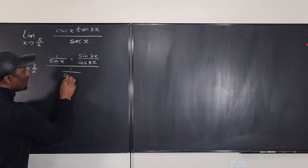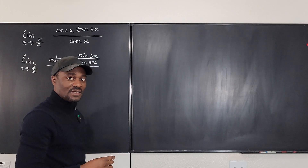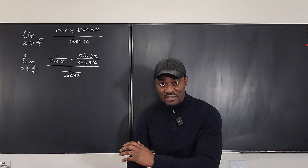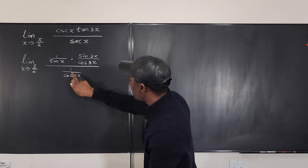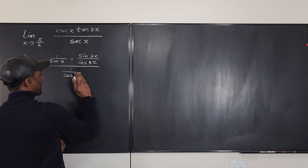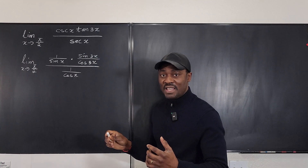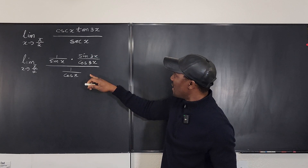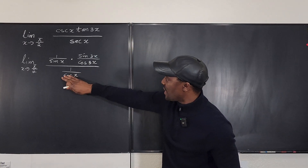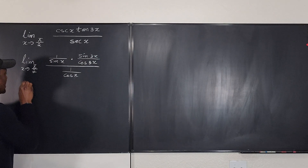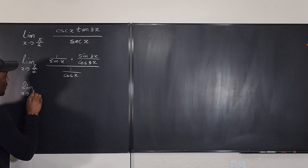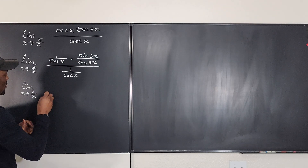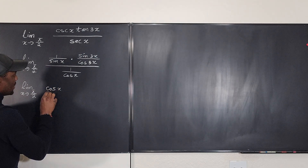Then we divide all of this by secant(3x), which is 1 over cosine(3x). We can see that this cosine can come up — just multiply top and bottom by cosine x. The cosine x terms cancel, so the expression becomes cosine x over sine x, multiplied by sine(3x) over cosine(3x).